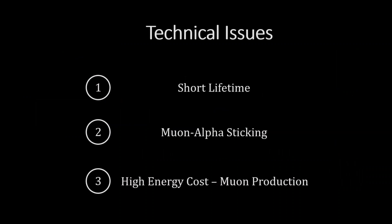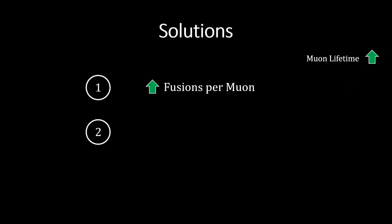So how can we improve all this? Well, we can find ways to increase the number of fusions per muon, which would mean reducing the likelihood they stick to helium nuclei, getting the muon unstuck from the helium after it sticks, or increase a muon's lifetime. All of these are tricky to address owing to the intrinsic properties of particles.